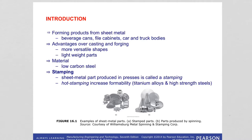The terms press working or press forming are commonly used to describe sheet metal forming operations because these are typically performed on presses using a set of dies. The sheet metal part produced in presses is called a stamping. Most processes involve sheet metals at room temperature, but hot stamping is also done to increase formability. Hot stamping is suitable for titanium alloys or high strength steels because higher temperatures provide more ductility and formability.